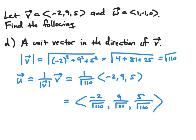This is a unit vector since we multiplied the vector by the reciprocal of its magnitude. It will be in the same direction as V since it is a scalar multiple of V with a positive scalar. So our unit vector is (-2/√110, 9/√110, 5/√110).